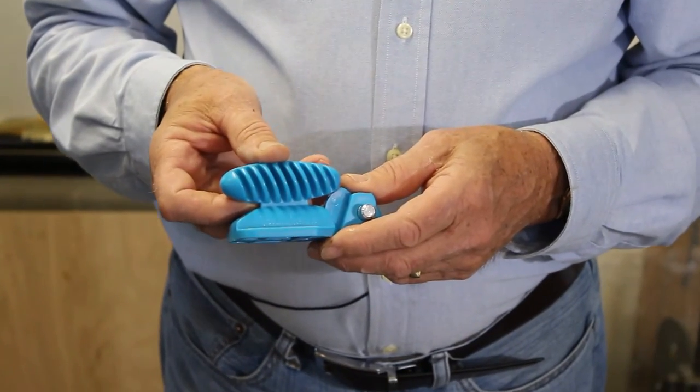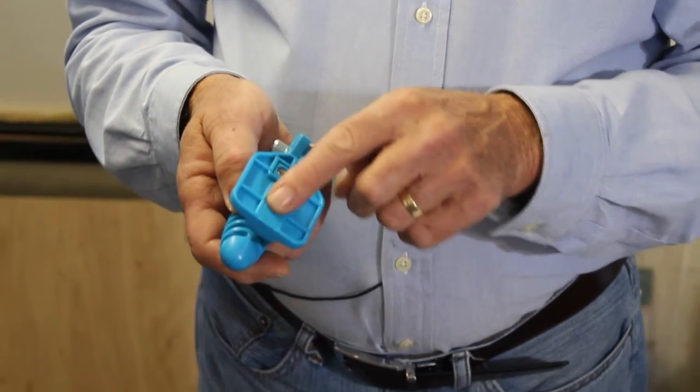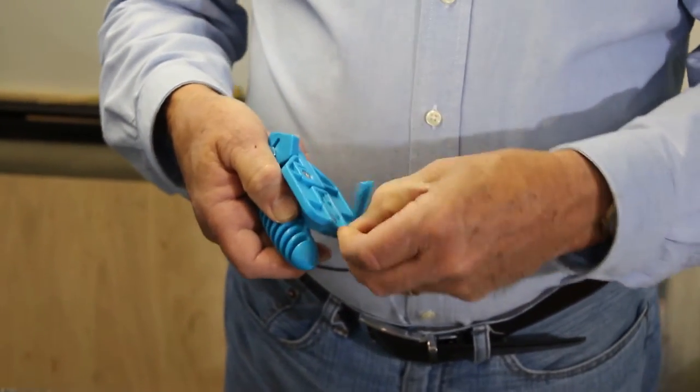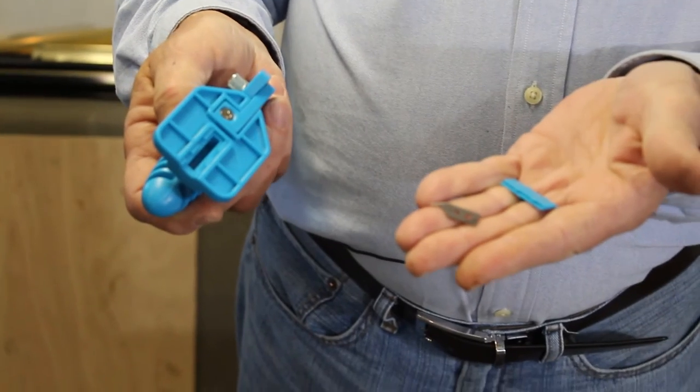To find the blade storage on the freestyle cutter, turn it over and there's a little door here that hides the blades. You can slide it out and there is the blade.